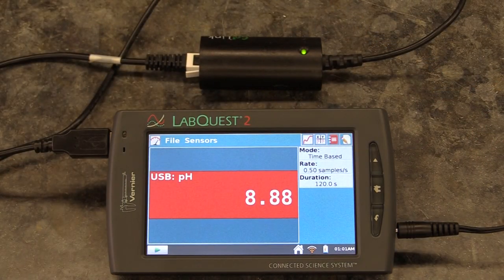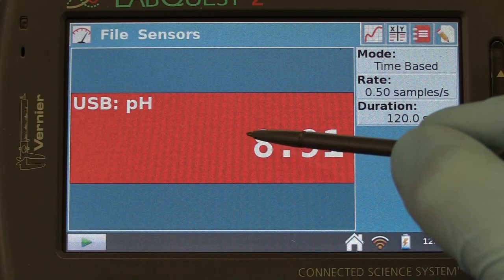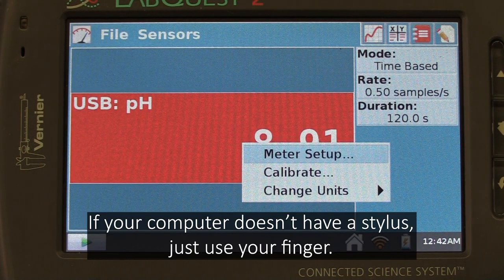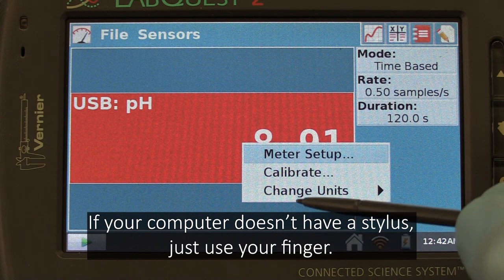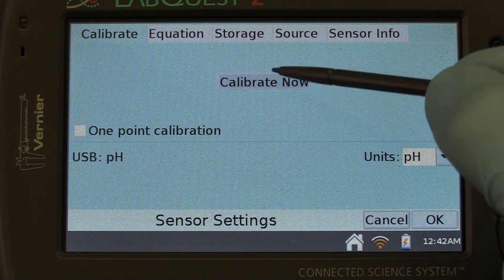As soon as you plug the probe in, a red box with a pH indication will appear on your screen. Use the stylus to click on it, then select Calibrate. On the screen it takes you to, select Calibrate Now.